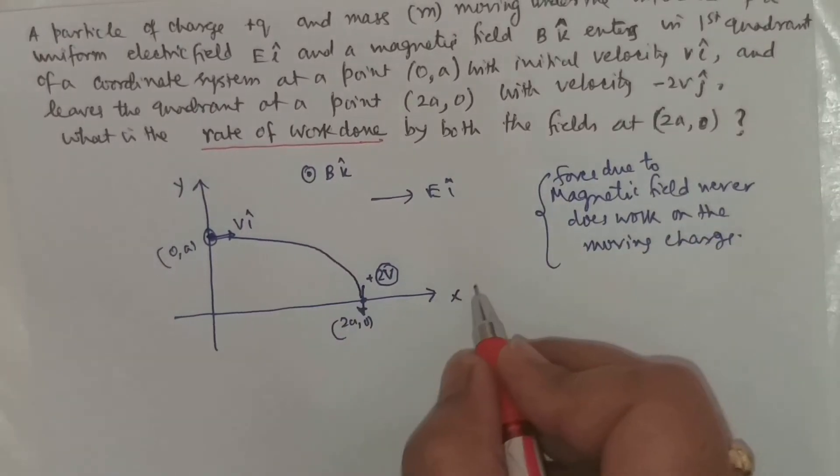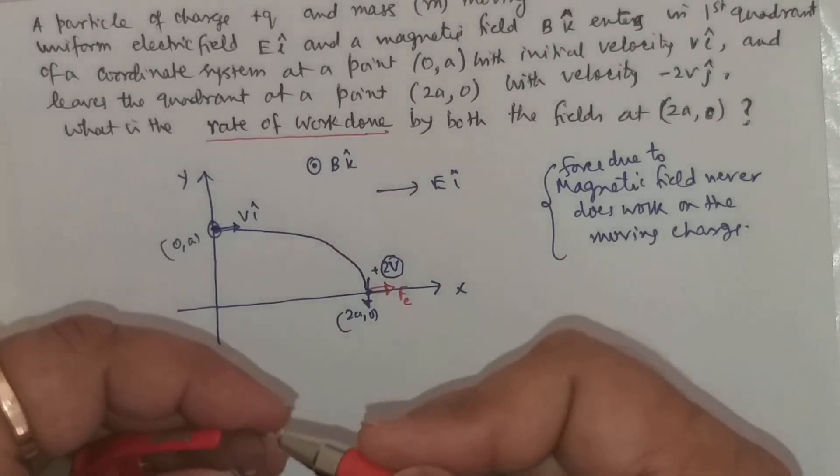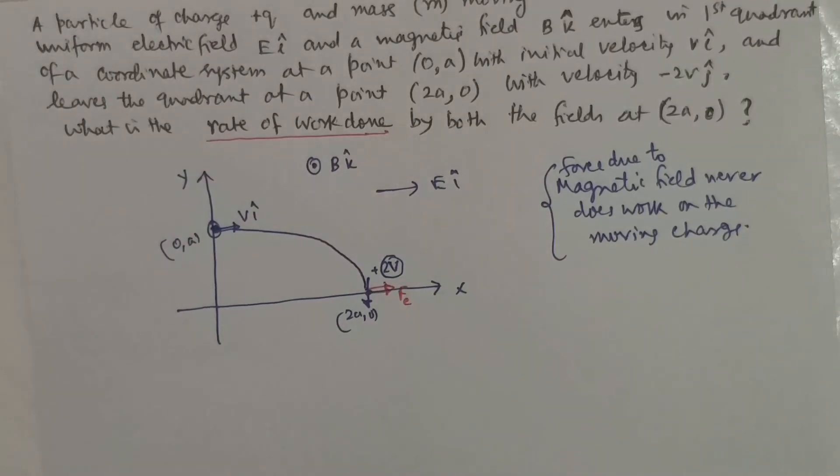The electrostatic force will be along this direction. So, work done will be 0, the power developed is 0.